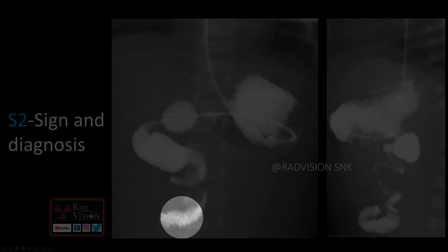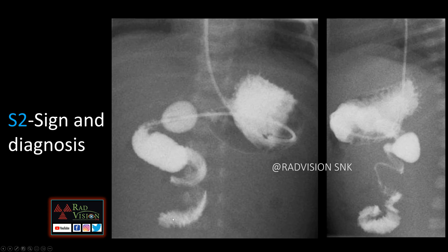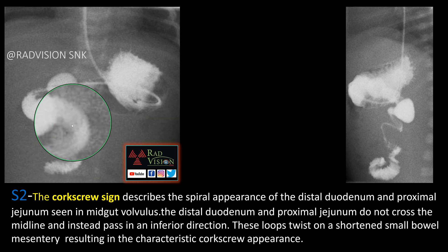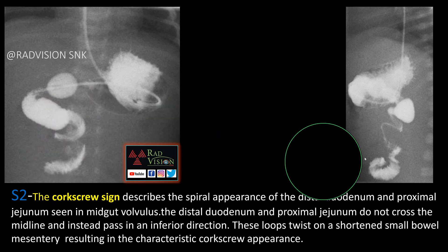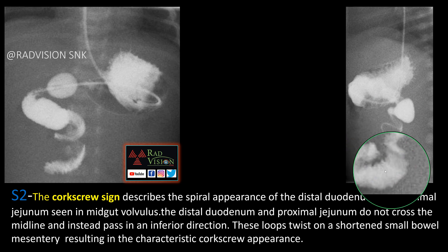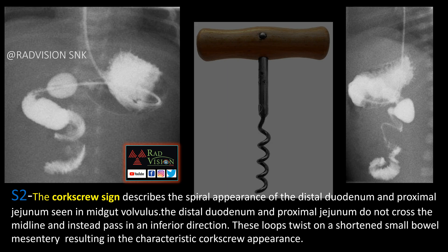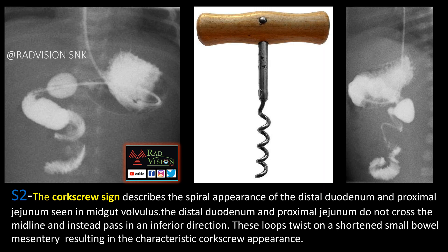Next sign — here you can see the duodenum and the jejunum are coiled and not crossing the midline. This is a case of the corkscrew sign, seen in midgut volvulus. The distal duodenum and proximal jejunum are coiled and resemble a corkscrew appearance; they do not cross the midline. These loops twist in a short small bowel mesentery, resulting in the characteristic corkscrew appearance. Remember: corkscrew sign in midgut volvulus.